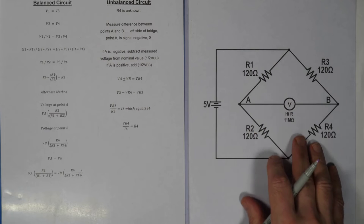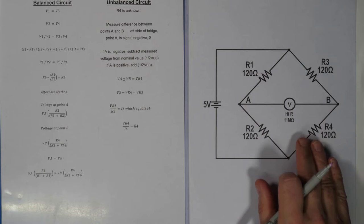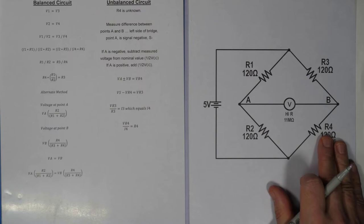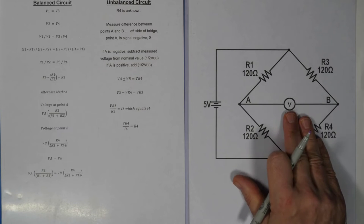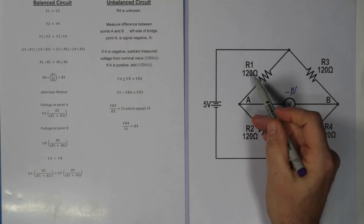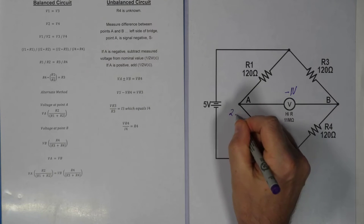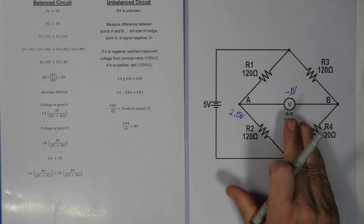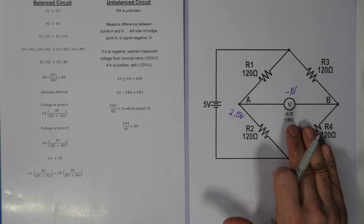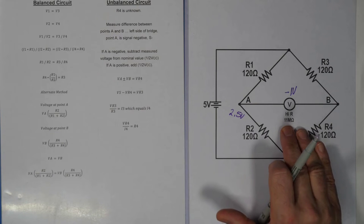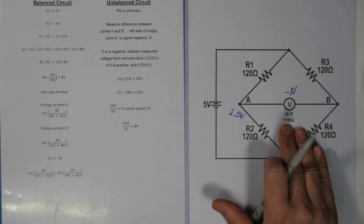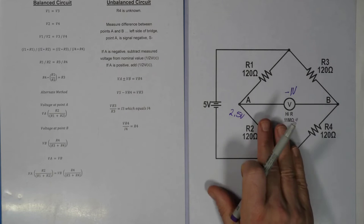If our circuit is not balanced, we'll have a difference in potential from point A to point B. Let's say R4 has changed — it's no longer 120 ohms — and our voltmeter is indicating negative one volt. R1 and R2 still give 2.5 volts on that branch; it won't change. The advantage of using a modern digital multimeter on the DC function is its very high input impedance, which isolates the two points so we don't have to worry about current flowing through the meter. That makes the calculation much simpler.